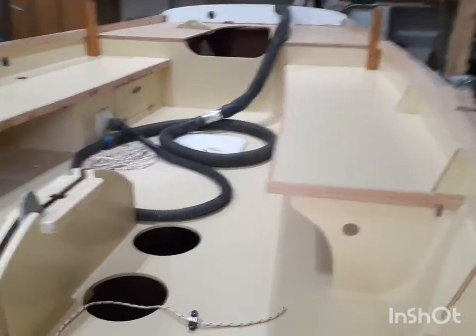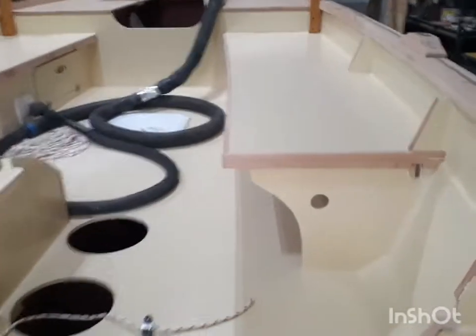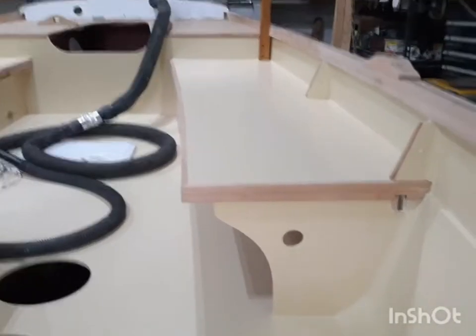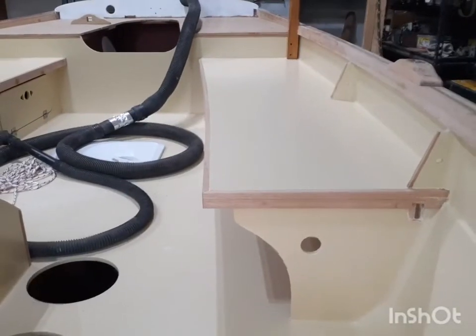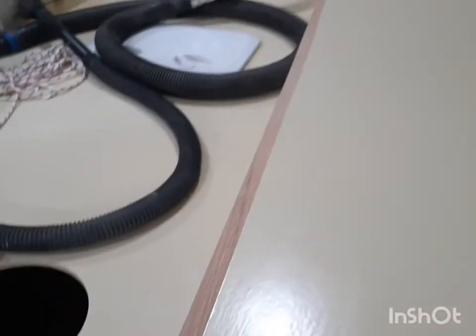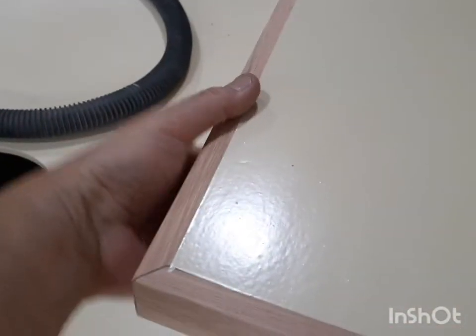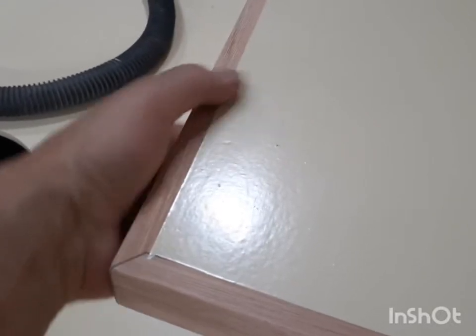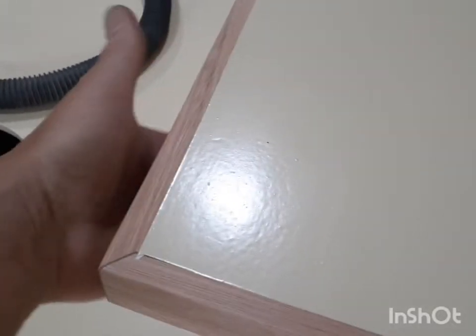Alright everybody, as you can see, the seat trim is on and it's got the curve in it. It turns out that just underneath, kind of like the aft end and this forward end, you can actually get your hands up under there and it's like a handhold.